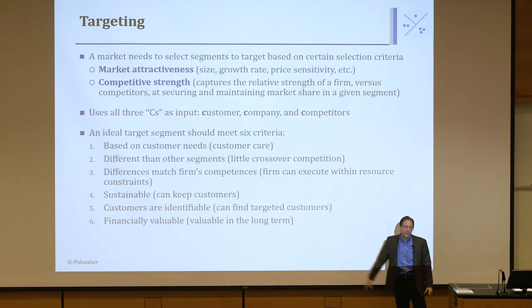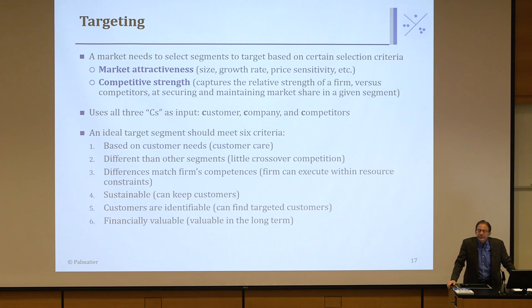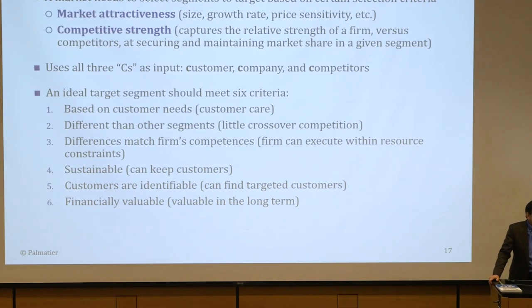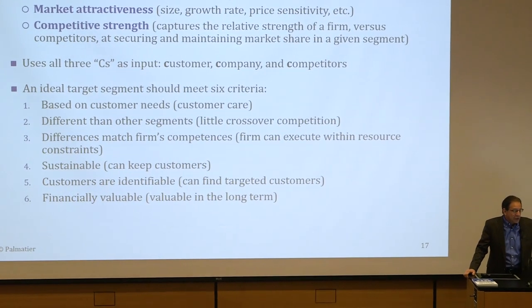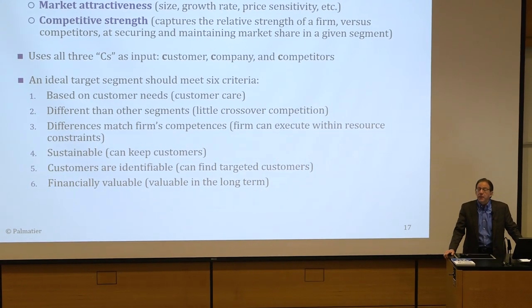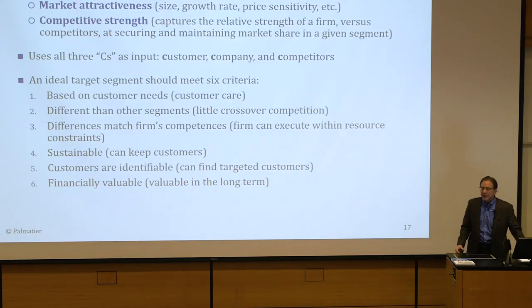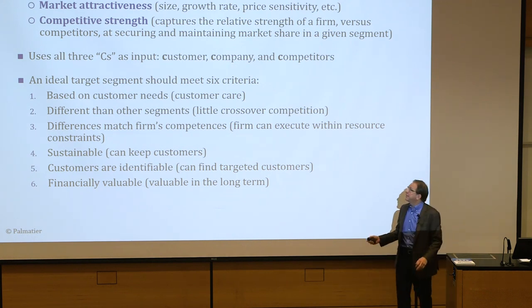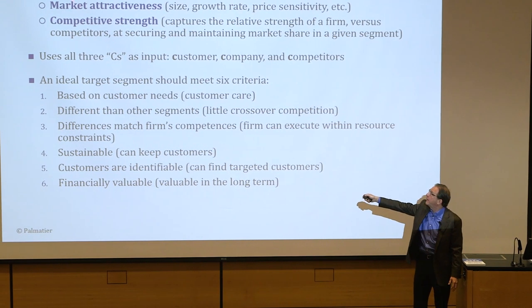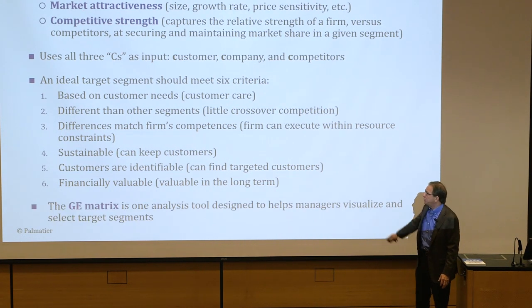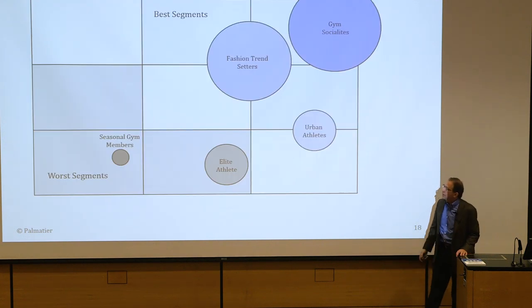An ideal target segment should meet six criteria: customers must care about what you're offering; there should be little crossover competition from other segments; you should be able to execute your strategy within your financial constraints; you should be able to retain those customers — sustainable; you should be able to find those customers — identifiable; and it has to be valuable financially. Typically though, we focus on two things: attractiveness and competitive strength. The GE Matrix is a tool for doing that.